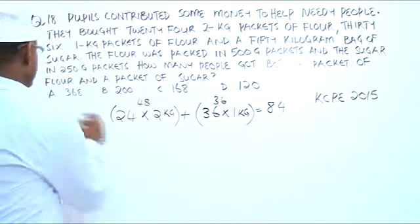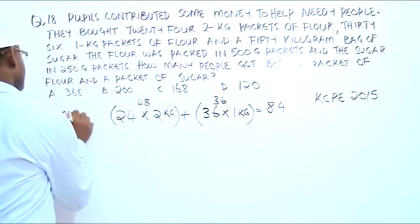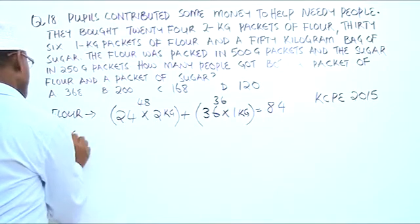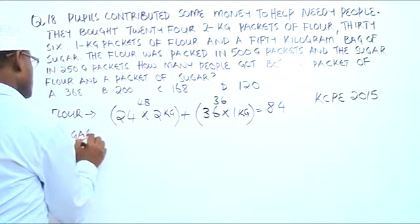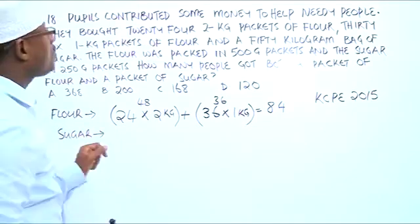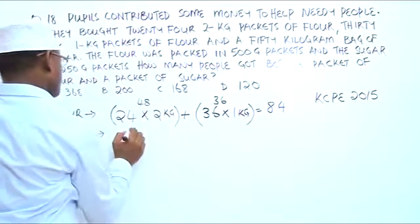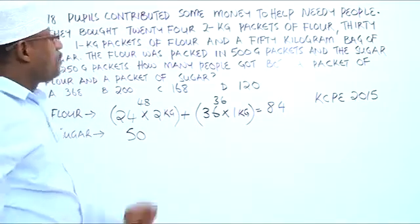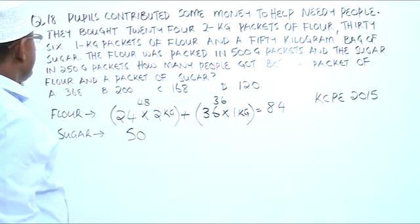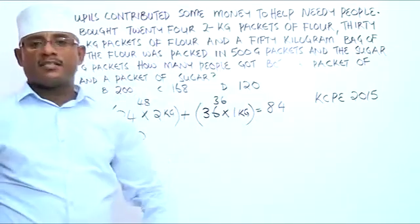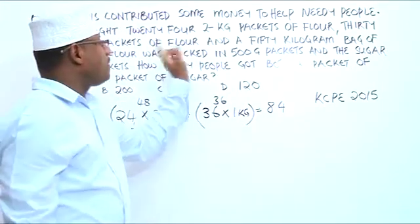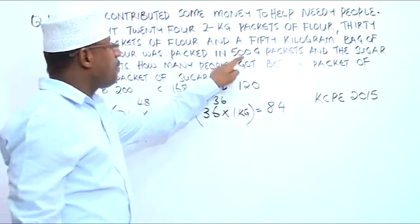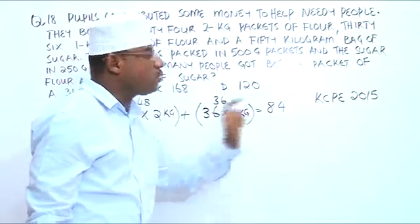And for sugar, we have 50 kilograms. Now, the flour was packed in 500-gram packets, so let us find how many 500-gram packets we are going to get from the 84 kilograms.